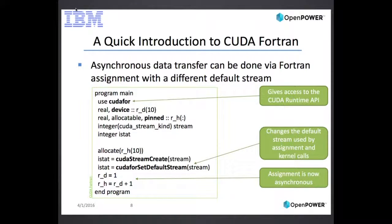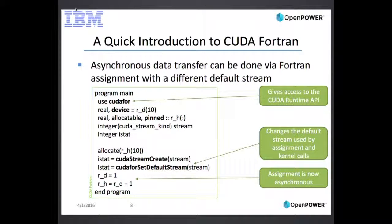CUDA Fortran also allows asynchronous data transfer, available via assignment as well as APIs. CUDA4 is a module that provides access to the CUDA runtime API. The pinned attribute gives you access to page-locked memory. You can use CUDA stream create — a CUDA runtime API call — to create a new stream, and CUDA Fortran has CUDA4 set default stream to change the default stream from stream zero to any stream you want. This makes subsequent assignments and kernel calls asynchronous. The two assignment statements are asynchronous because we're using pinned memory; without pinned memory, they would be synchronous.